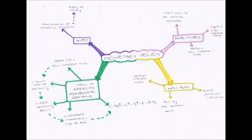One final thing to note: interest rates are the cost of borrowing as well as the reward from saving. With a loose monetary policy and a low interest rate, the reward from saving is low, so people are less likely to save in banks and more likely to spend — therefore consumption will rise and aggregate demand will rise. With a tight monetary policy and a high interest rate, there is a higher reward from saving, so people are more likely to save in the bank and have less money to spend, causing consumption and aggregate demand to drop.